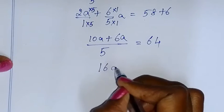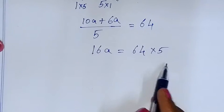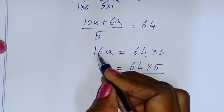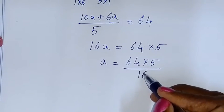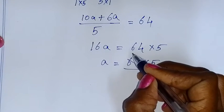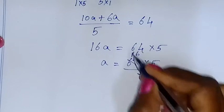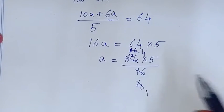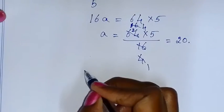So 10A plus 6A is 16A, which equals 64 into 5. Therefore A is equal to 64 times 5 divided by 16. Simplifying: 64 divided by 16 is 4, and 4 times 5 is 20. So A is equal to 20.